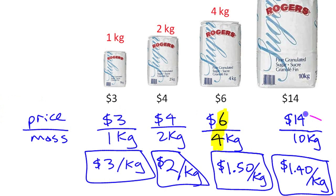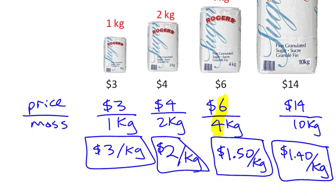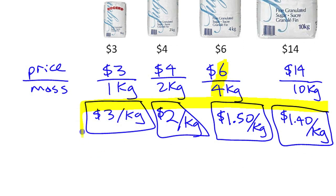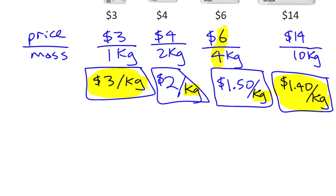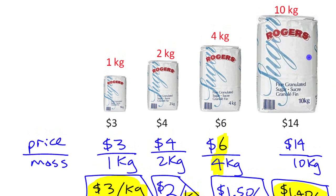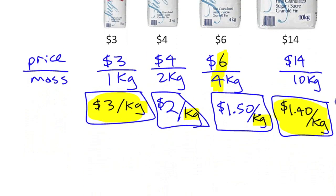We've taken rates that all had different numbers on the top and bottom, which makes them hard to compare. What you do is make them all have the same term on the bottom — that is, turn them all into unit rates so the bottom term is one, meaning all are per one kilogram. The cheapest is the ten kilogram bag at a dollar forty per kilogram — less than half the per-kilogram cost of the small bags. Often the largest bag is the cheapest per unit, though you should also consider whether you'll actually use that much.